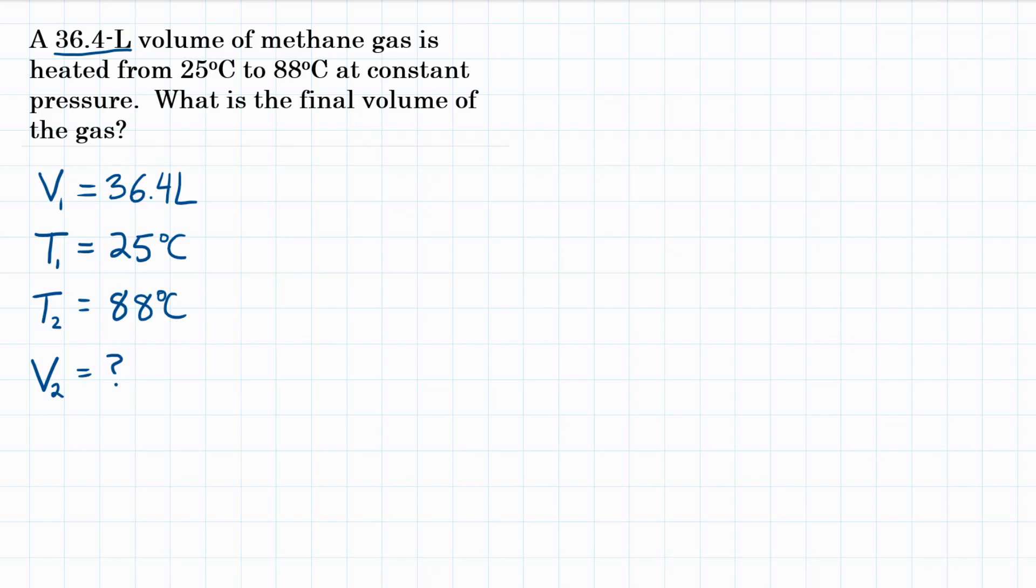So this is a Charles Law problem, which is relating volume and temperature of a gas. But let's say we didn't know that. If we wanted to start with the combined gas law, what you might memorize is P1 V1 over T1 equals P2 V2 over T2.